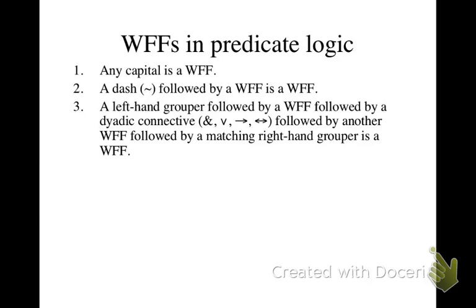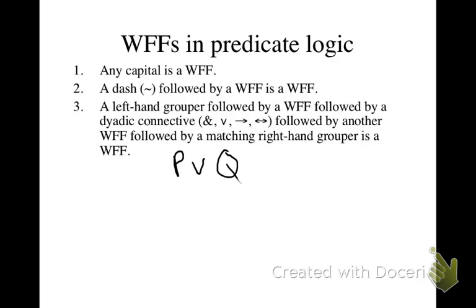The formula (P ∧ Q) would be a well-formed formula according to this definition because we have a left-hand grouper, then a well-formed formula, then a dyadic connective, then another well-formed formula, and then a right-hand grouper. According to the definition, technically we need outer parentheses on this. However, we really don't — so P ∧ Q is actually a well-formed formula as well.